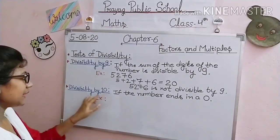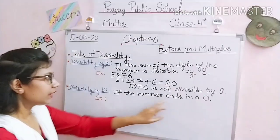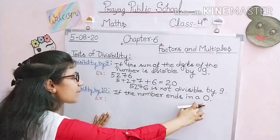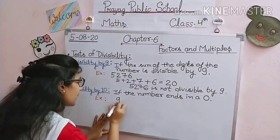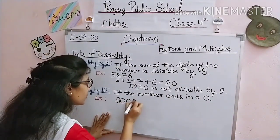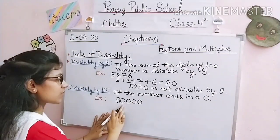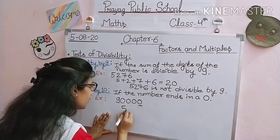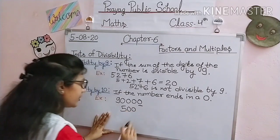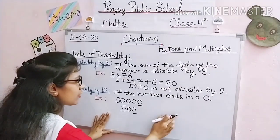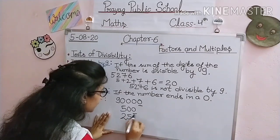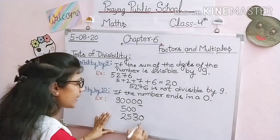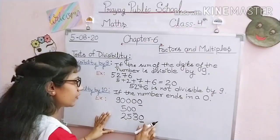Next is divisibility by 10. If the number ends in 0, then the given number is divisible by 10. For example: 90,000 ends in 0, so 90,000 is divisible by 10. Similarly, 500 ends in 0, so 500 is divisible by 10. And 2,530 ends in 0, so 2,530 is divisible by 10.